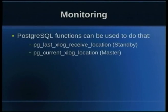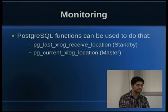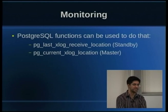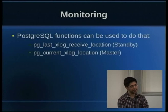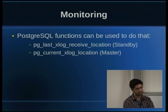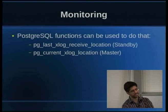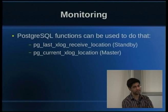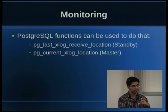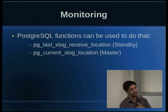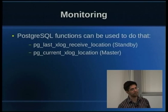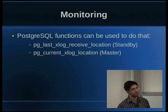A little bit about monitoring: to check the lags between primary and secondary server, there are a few functions available. You can run pg_last_xlog_receive_location() on the standby server, which gives you the WAL log location. Then you can run pg_current_xlog_location() on the master server and compare the two values to determine how far apart they are — that gives you the lag between the two servers.